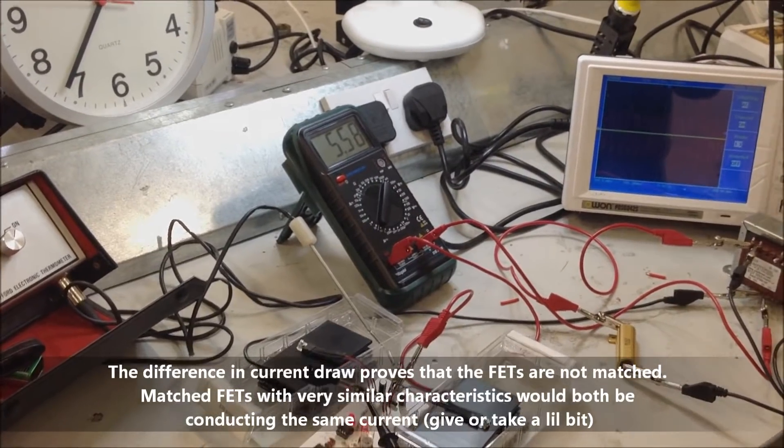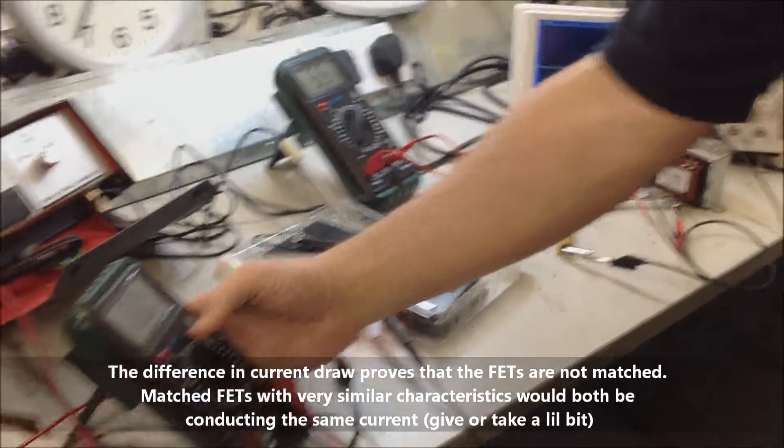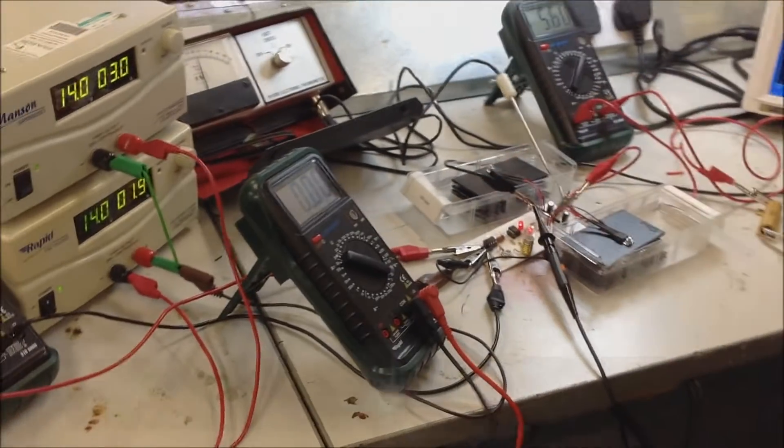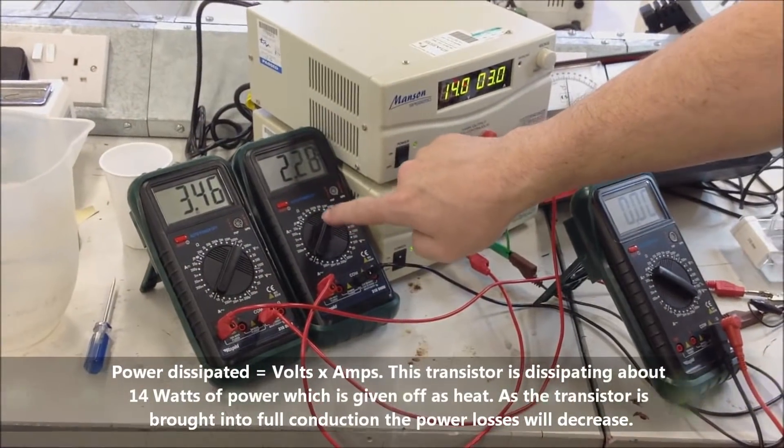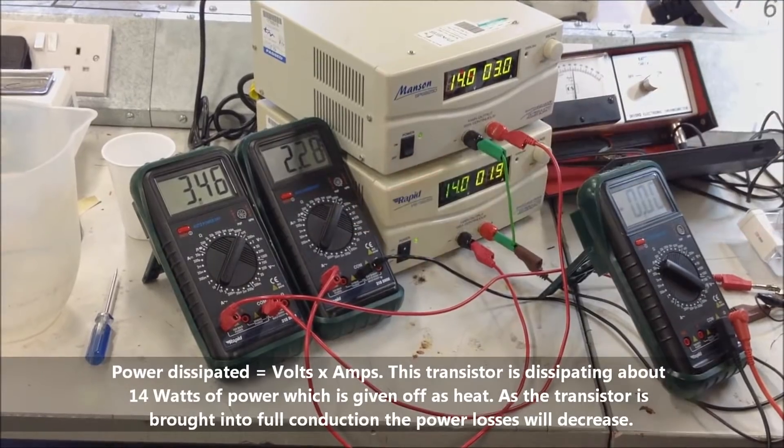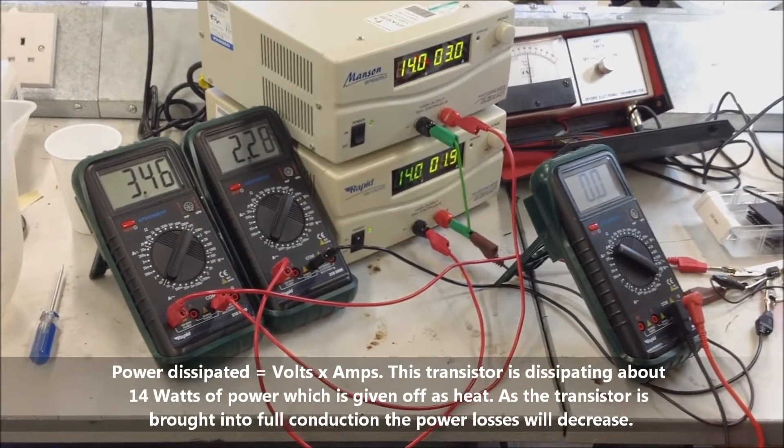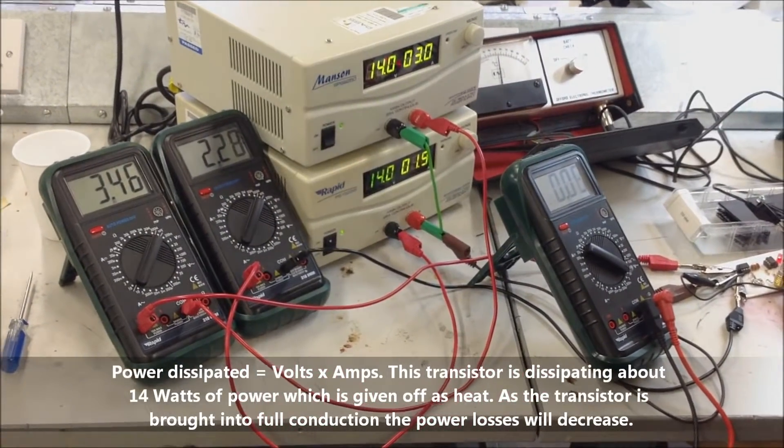We can work out the power dissipation by taking the current draw. I'm going to take the current draw of the negative MOSFET, the P-channel one on the negative swing. And we can see that we've got about 2.28 amps. And if you then measure the voltage.